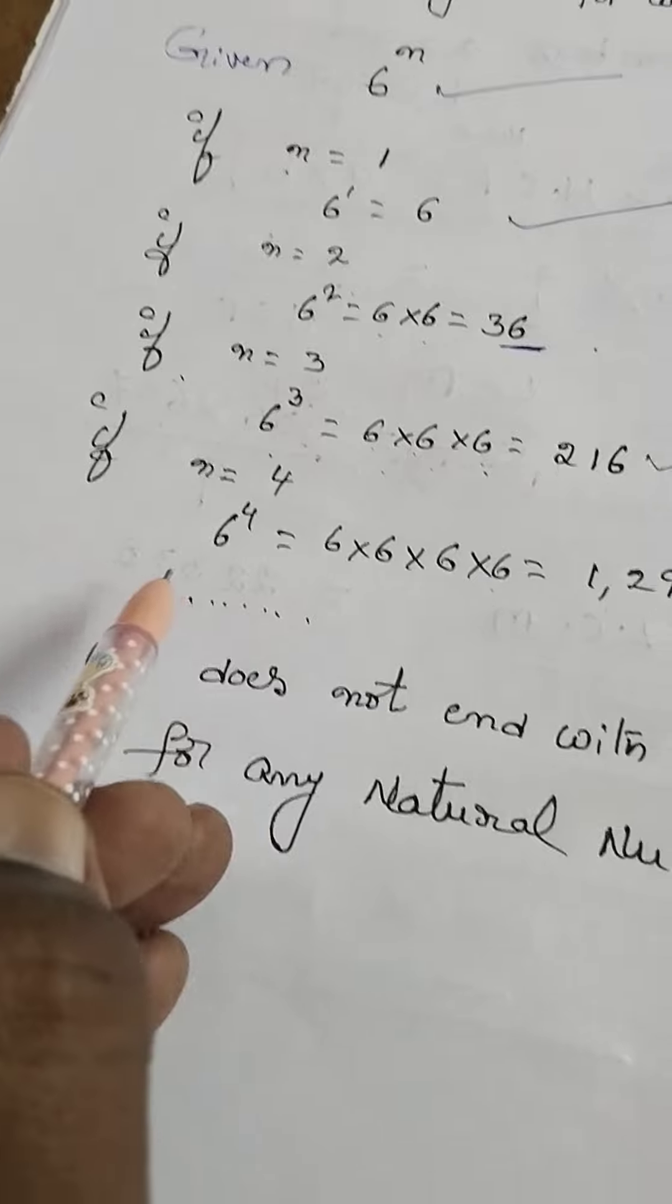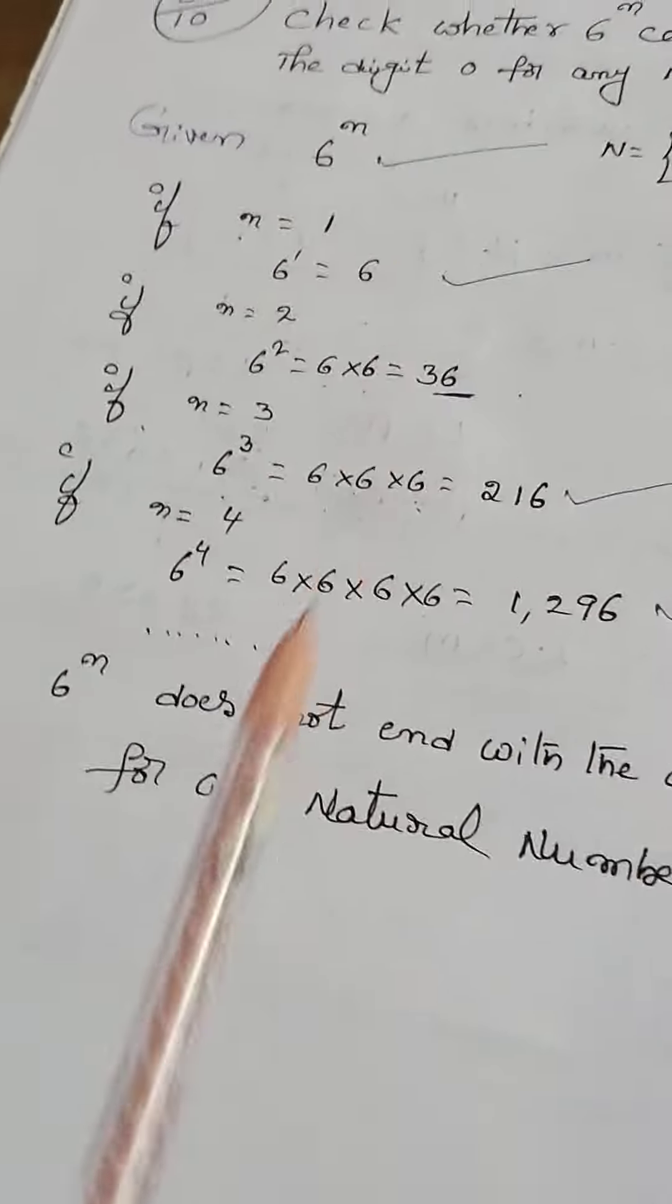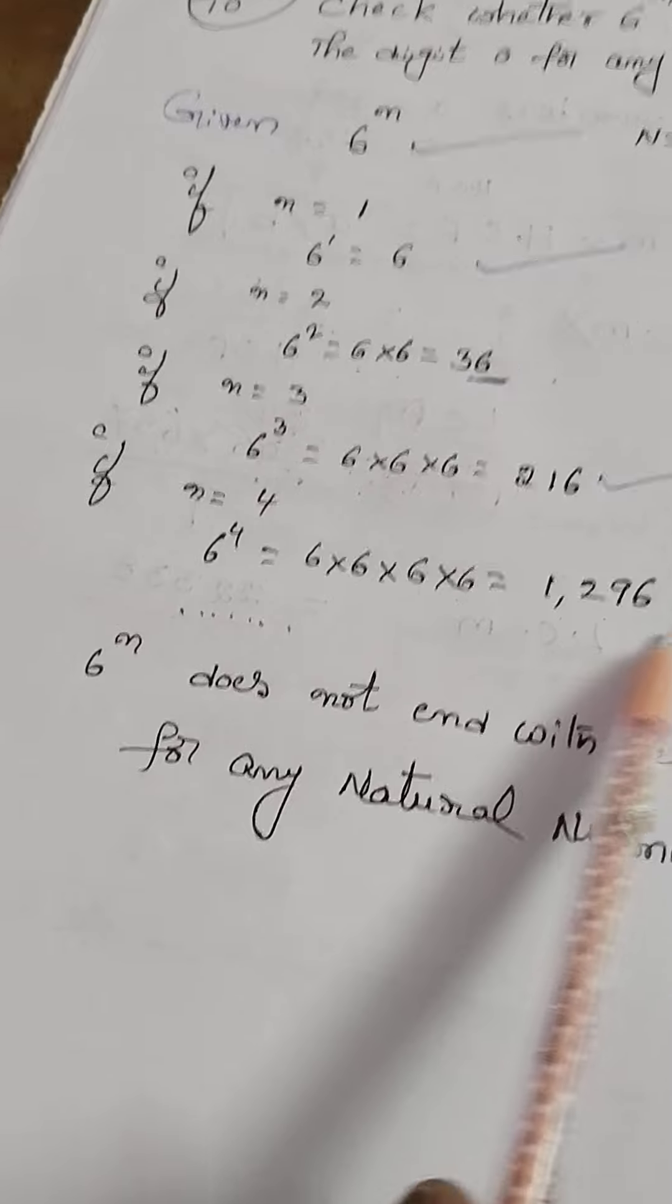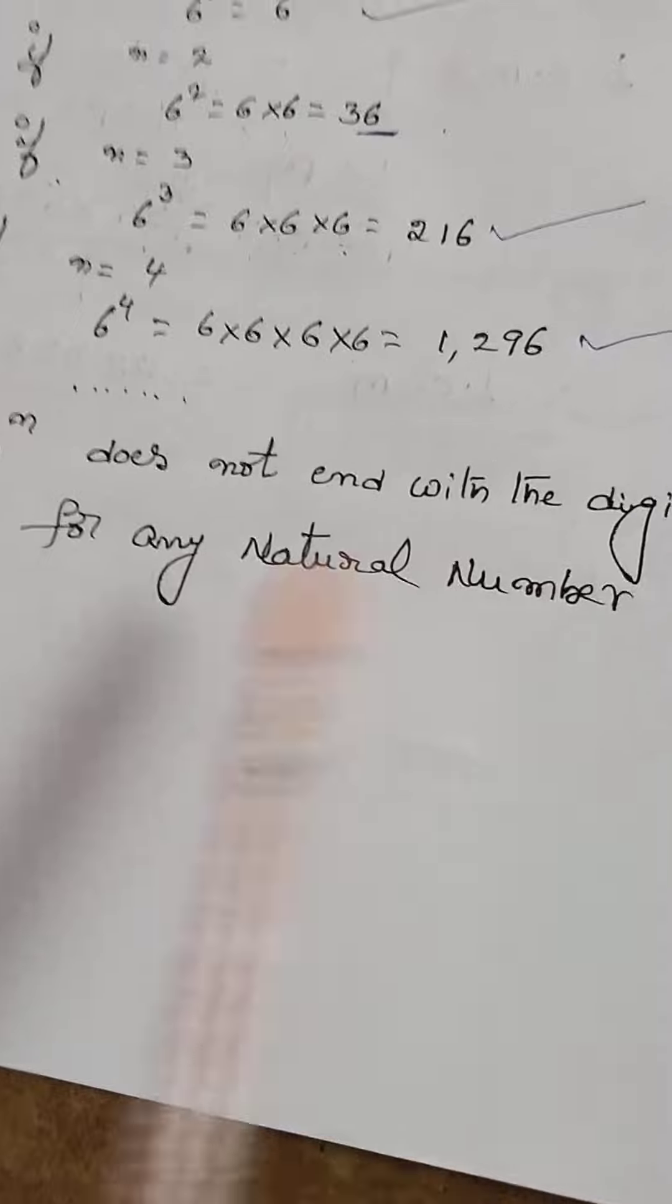And so on - for any natural number n, 6 power n does not end with the digit 0 for any natural number.